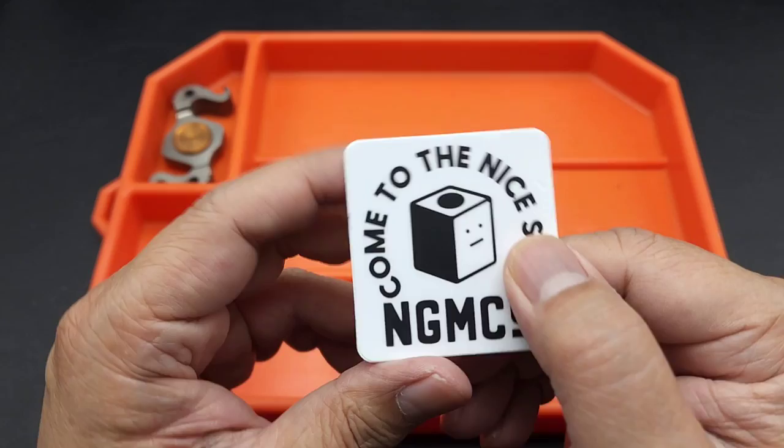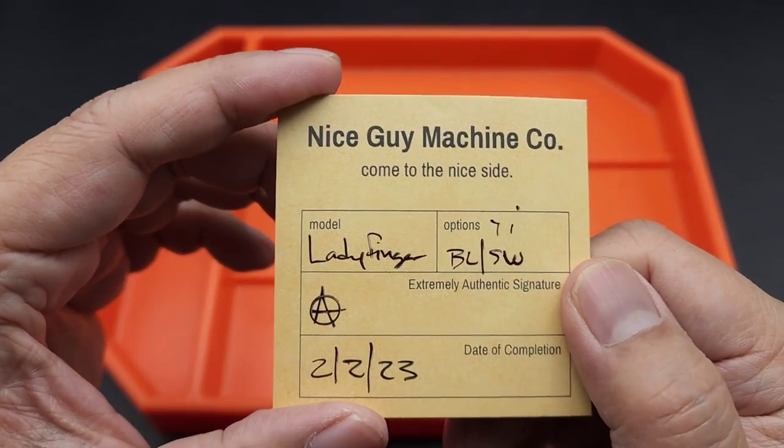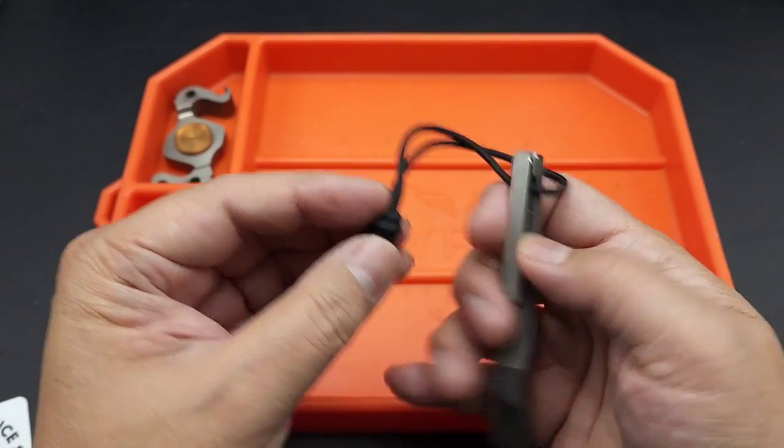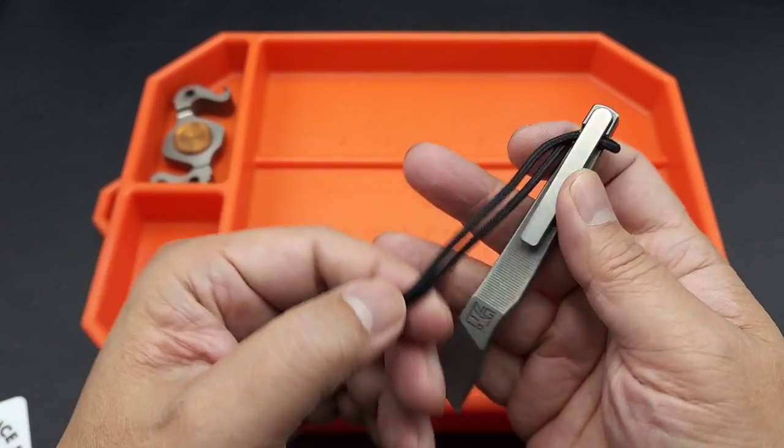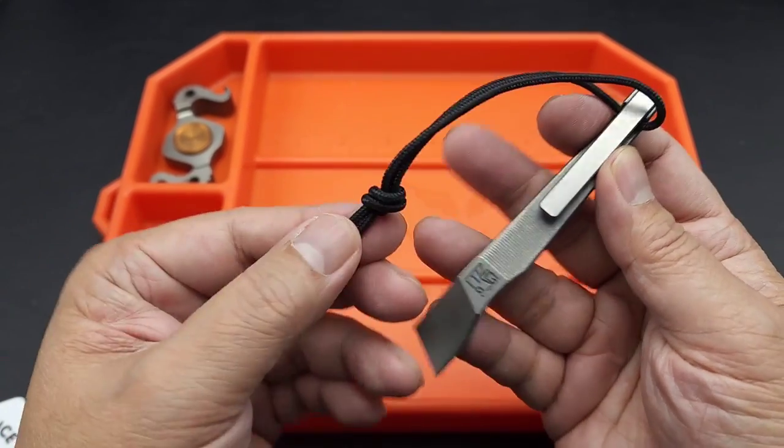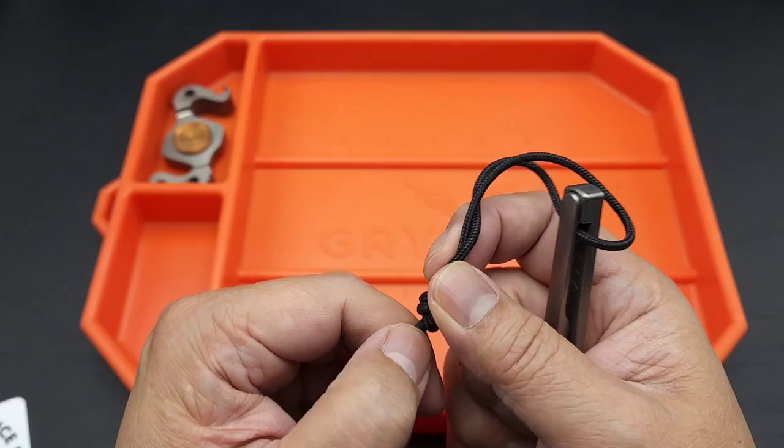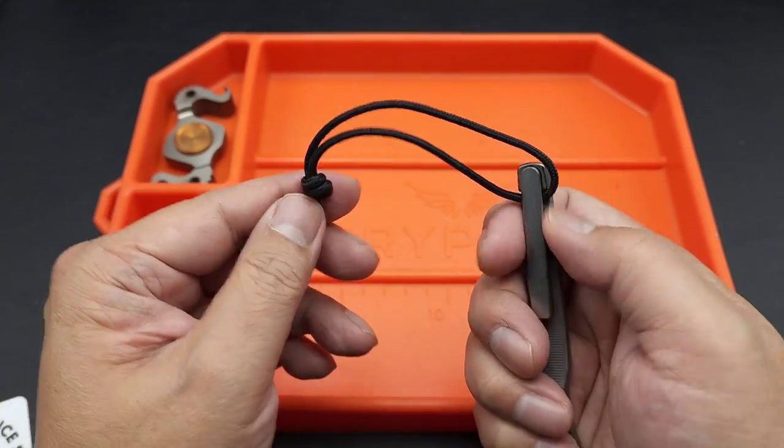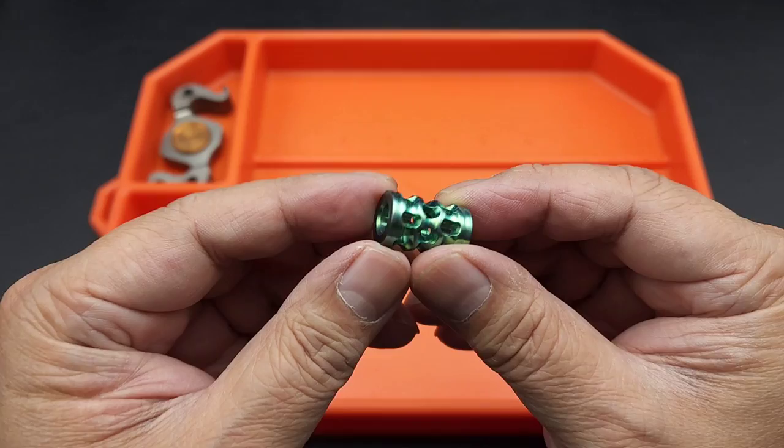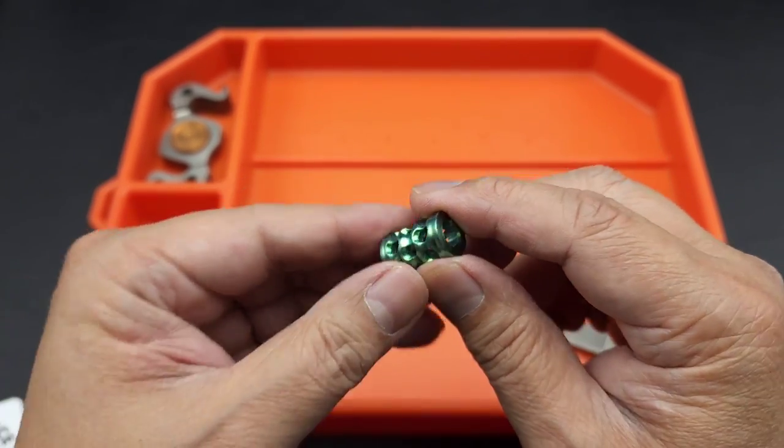All right guys, so I don't have a... this is an outtake. I don't have a bead for it, and the bead that Archie sent me I'm already using on one of his other pry bars. So I think I'm gonna use this bead, which I'm not even sure where I got this bead from.